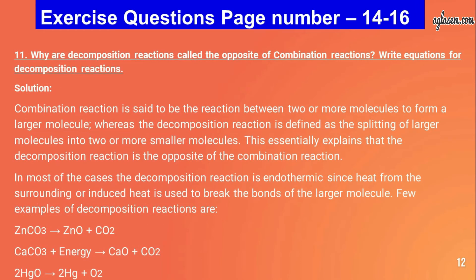Question number eleven: why are decomposition reactions called the opposite of combination reactions? A combination reaction involves two or more molecules combining to form a larger molecule, whereas a decomposition reaction is the splitting of a larger molecule into two or more smaller molecules. Most decomposition reactions are endothermic. Examples: ZnCO₃ → ZnO + CO₂; CaCO₃ + energy → CaO + CO₂; 2H₂O₂ → 2H₂O + O₂.